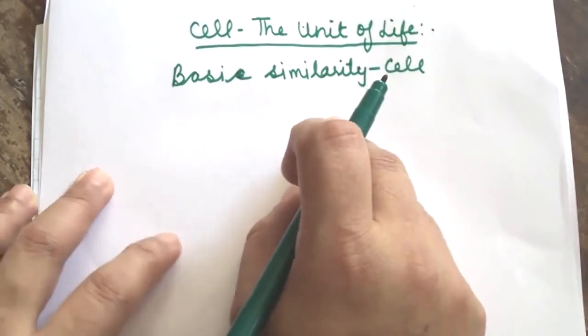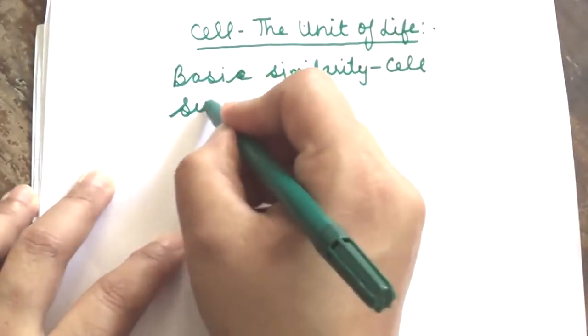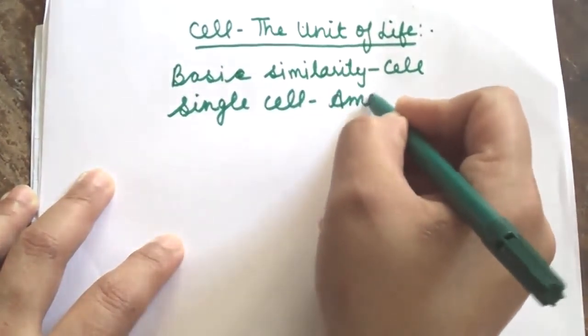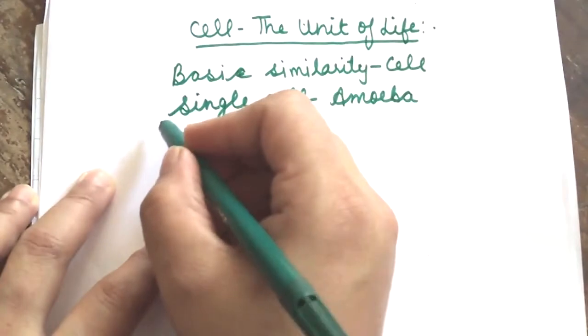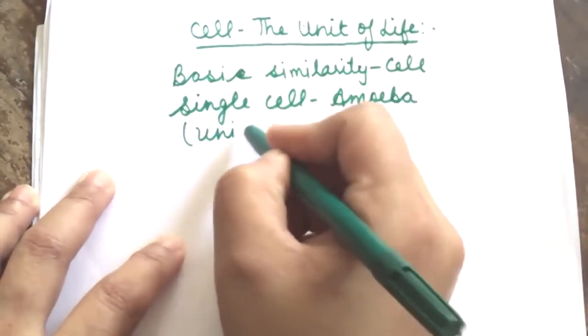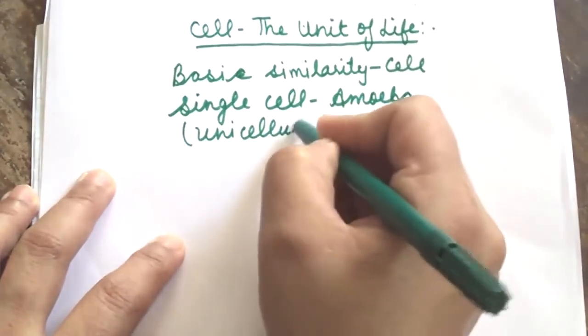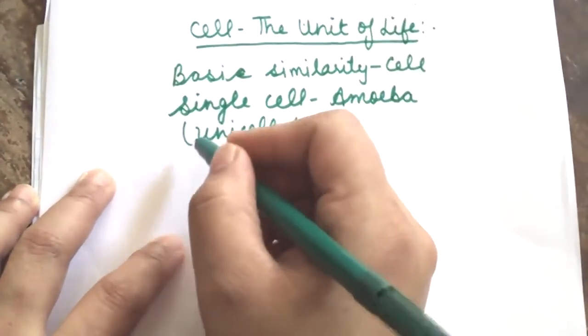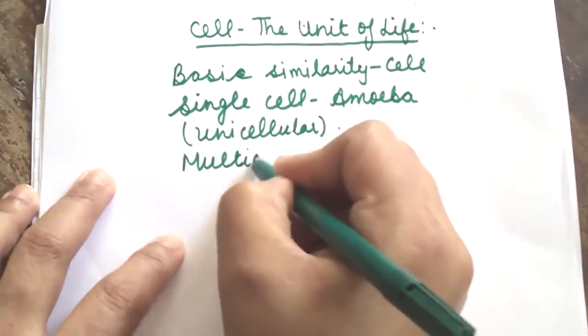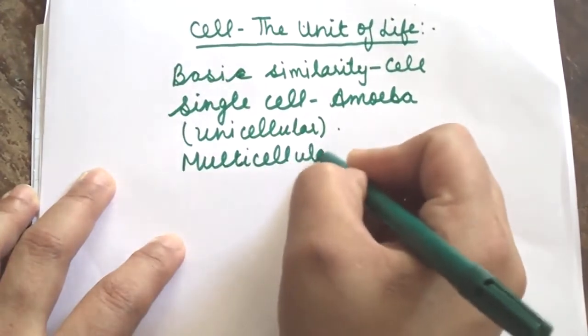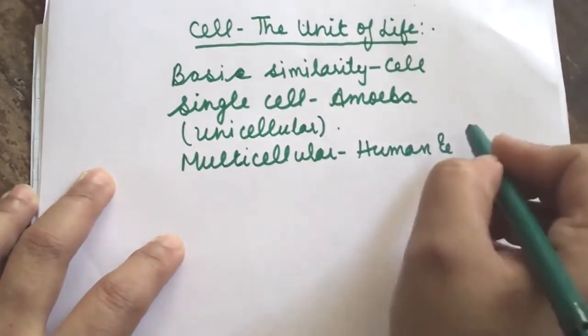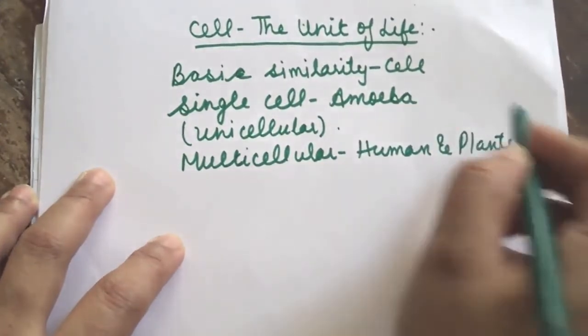All living organisms are made up of cells. Some organisms are single celled, for example Amoeba. They are known as Unicellular Organisms. And some are composed of many cells. They are known as Multicellular, for example Human and Plants, Animals.